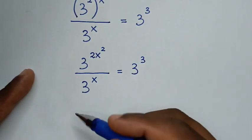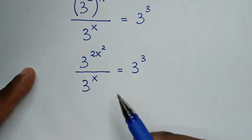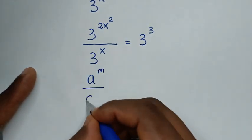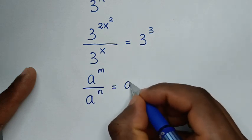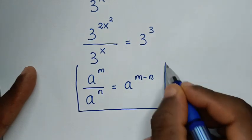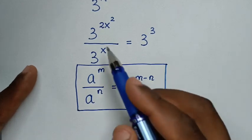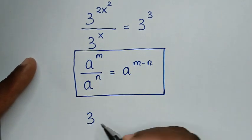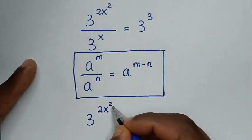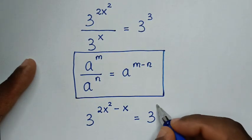In the next step, we apply the division of exponents rule with the same base but different powers: a to the power of m over a to the power of n equals a to the power of m minus n. Applying this rule, we get 3 to the power of 2x squared minus x, equal to 3 to the power of 3.